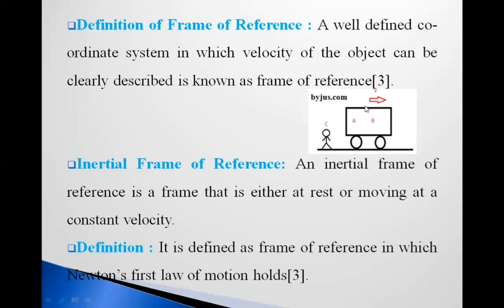A and B are in the same frame of reference, while C is outside that carriage. An inertial frame of reference is one that is either at rest or moving with constant velocity. If the carriage is at rest or moving with constant velocity with respect to the frame of reference in which man C is present, that is an inertial frame.